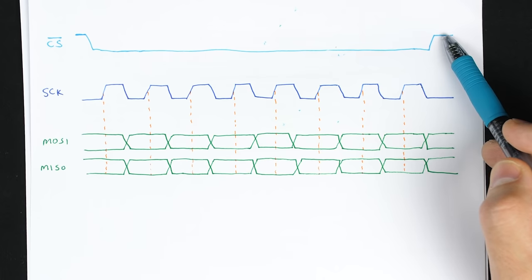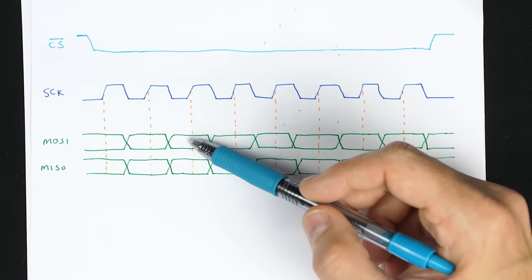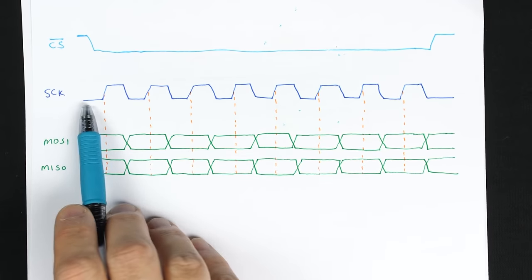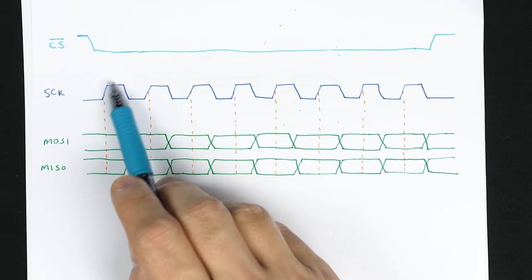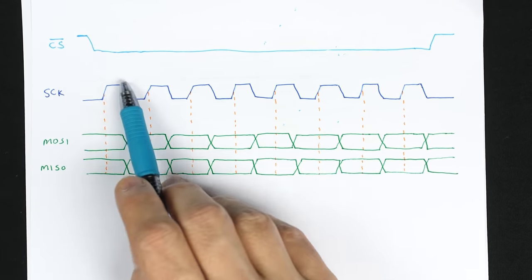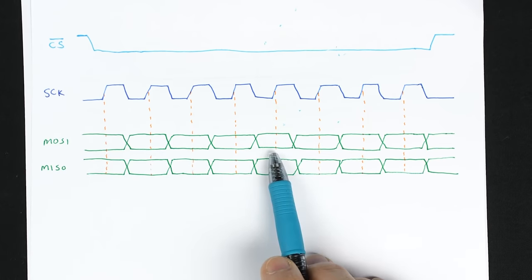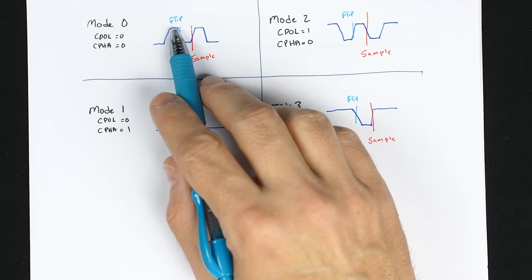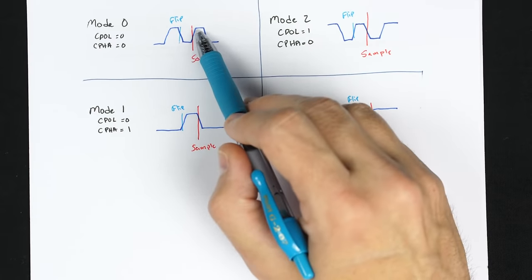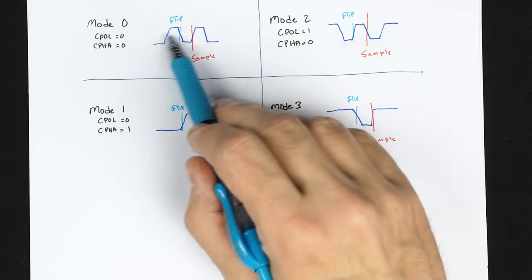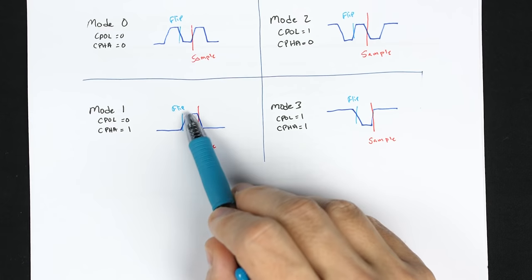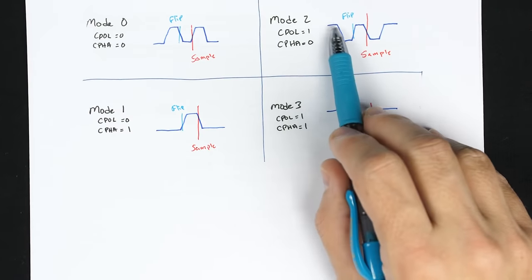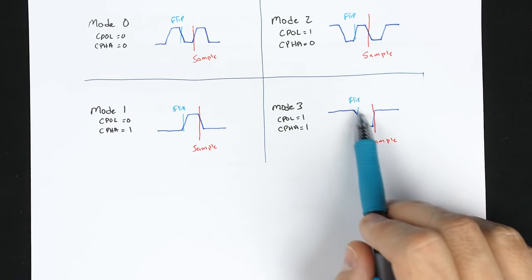There is no spec for SPI, so some of this definition is a little loose. For example, there's no single rule about how the clock is actually interpreted. Here I'm showing the clock starting out low when idle and using the positive-going transition to sample each bit, and the negative-going transition to flip from one bit to the next. But there are actually four different ways this could work: clock starts low with sampling on rising edge, clock starts low with sampling on falling edge, clock starts high with sampling on falling edge, or clock starts high with sampling on rising edge.